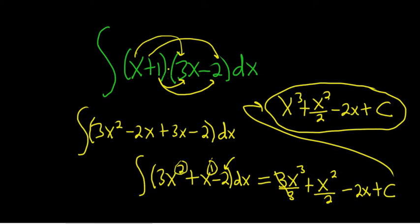So whenever you have a product like this, just multiply, distribute everything through, clean everything up, and then just use the power rule. That's it.